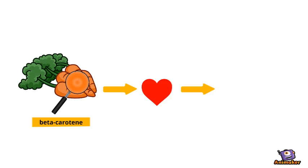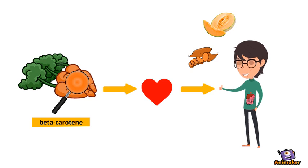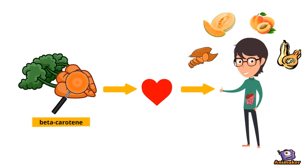It is found in a variety of fruits and vegetables including carrots, sweet potato, apricots, and squash, giving them the yellow-orange color.